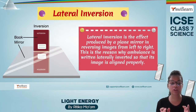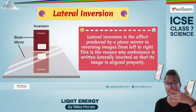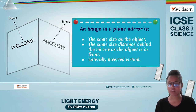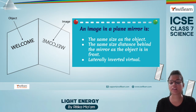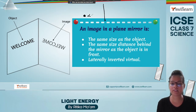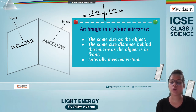Lateral inversion is the effect produced by any plane mirror in which the left side becomes the right side. This is the reason why 'AMBULANCE' is written in that particular format, so we can see it properly in the rear view of vehicles. Talking about the properties of an image formed by a plane mirror: it is the same size as the object; the distance of the image behind the mirror is the same as the distance of the object in front of the mirror. For example, if an object is kept one meter in front of the mirror, the image will be formed one meter behind the mirror. The image is also laterally inverted and virtual.